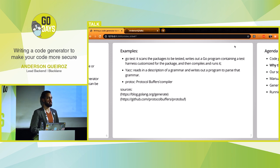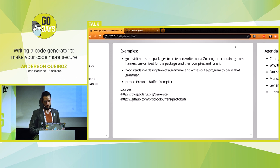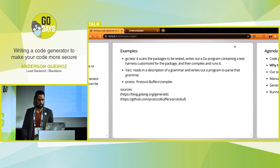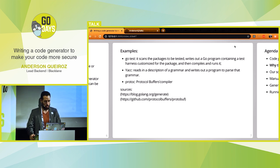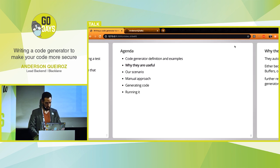Some examples: if you don't know, go test is a code generation tool — when executed it gets your tests and creates a whole binary program around it and executes it. It scans the package to be tested, writes out a Go program containing a test harness customized for the package, compiles it and runs it. Yacc is another code generation tool that reads a description of a grammar and writes out a program to parse that grammar. Protocol buffers — protoc — reads the proto file and generates code in the desired language.